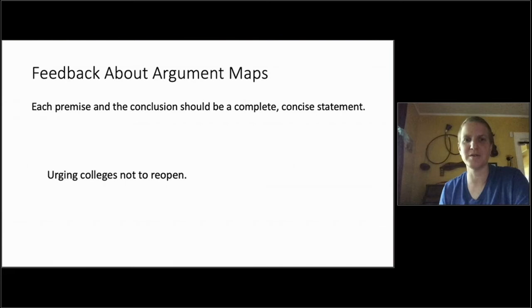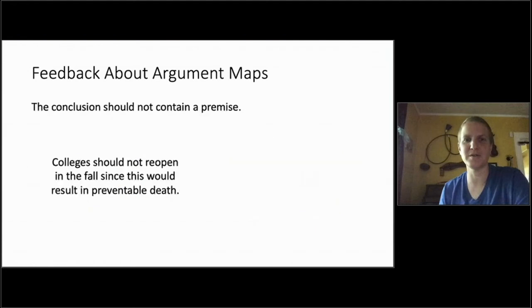Another issue is that each premise and the conclusion should be a complete, concise statement. Just one idea in each premise and the conclusion. And that will get you into trouble when you try to map it if you've built in too much into the conclusion or if you haven't made clear what your statement is. So I saw some sentences like this. Urging colleges not to reopen. That's not a complete sentence. So what is this point? What is the author, whoever, the student that wrote something like this, trying to say? It's not always clear when it's not clear in the context of the argument. So you should have a complete sentence, something like that. Colleges should not reopen in the fall. The first one is a sentence fragment. That's why it's not what is asked for in the assignment.